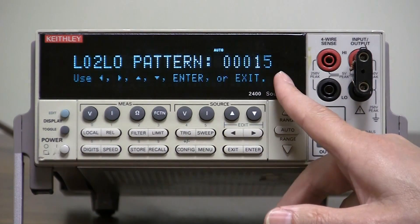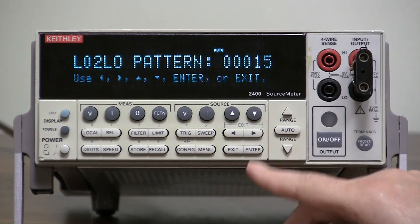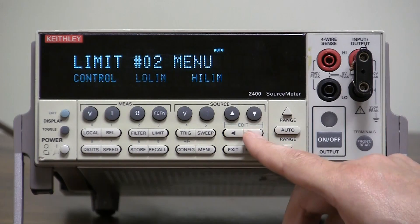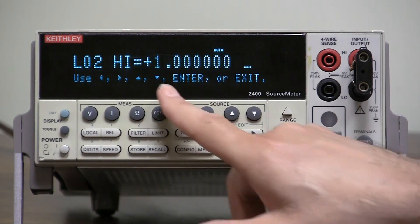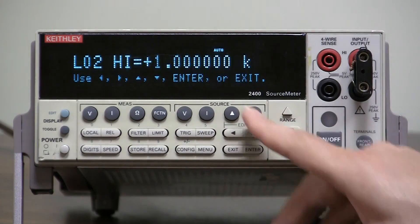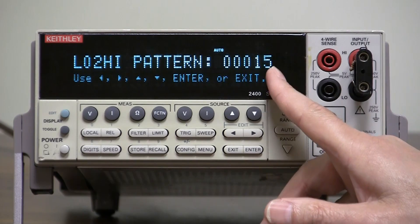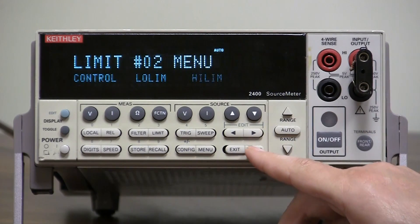It asks you for the digital out pattern of 15. You could choose anywhere from 0 to 15. Hit enter. We do the same thing with the high limit. Enter. 1. Well, let's just go up to 1K. Now it's 1K. Hit enter. We'll keep the digital I/O pattern at 15. Go into that in another video. Enter. Exit.